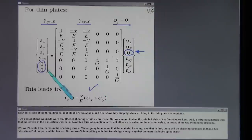We won't exploit the zeroes in the shearing strain. We're going to assume that the material locks up and that in fact there will be shearing stresses in those two directions, the tau YZ and the tau ZX. So we won't do anything with that knowledge except to say that the material locks up in shear.